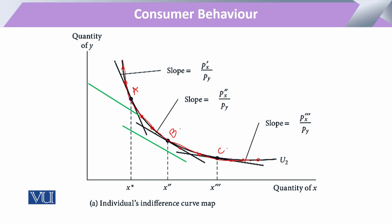A line tangent to bundle A will have a steeper slope. A line tangent to bundle B will have a somewhat flatter slope, and the budget line tangent to point C will be even flatter than at point B. So the slope changes from steeper to flatter going from left to right. This means when the price of a commodity reduces, the slope decreases towards the right.